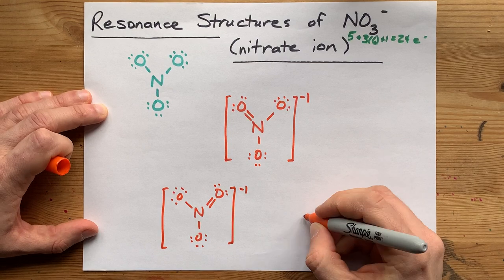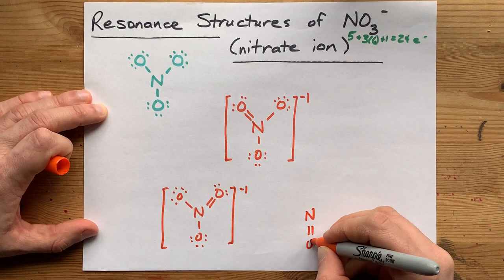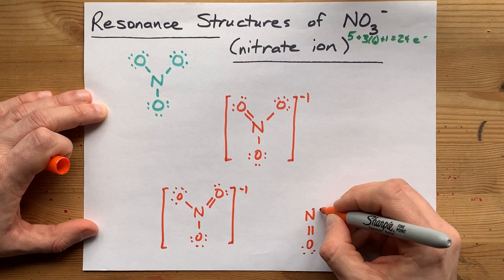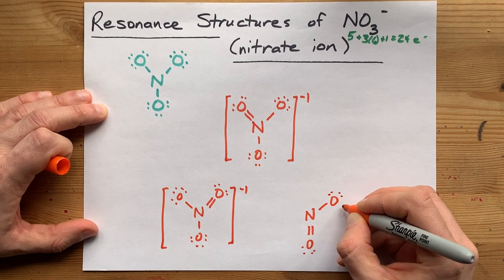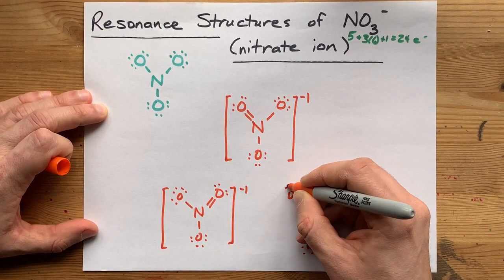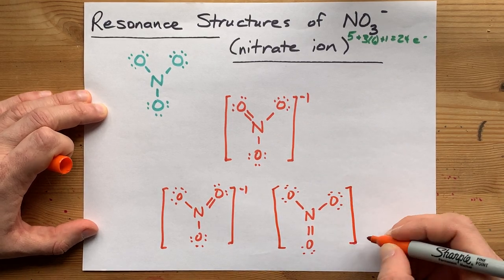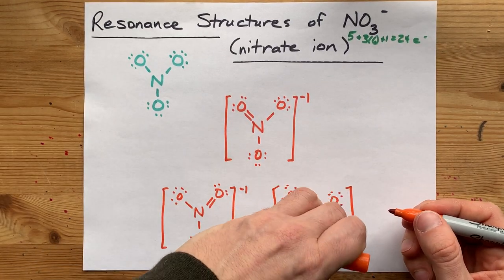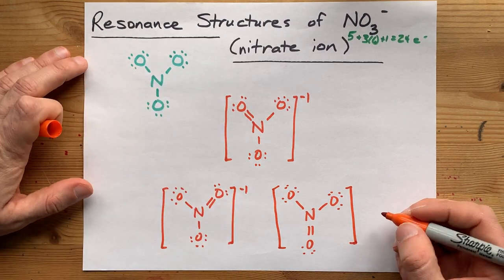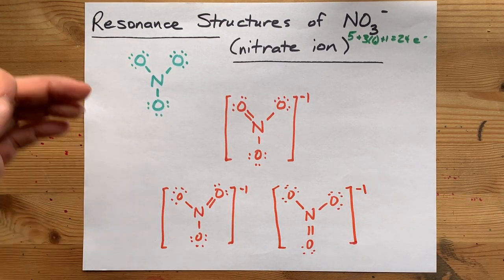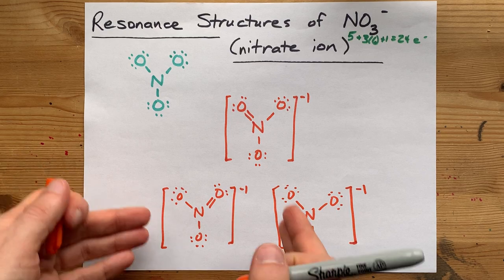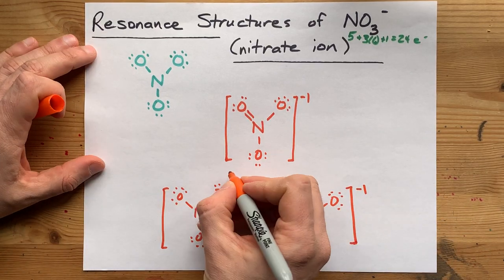And again, just as easily, we could have brought in an electron pair from the oxygen on bottom. That leaves the two upper oxygens as single bonds. You might recognize that these are all kind of equivalent. I've basically just taken each one and rotated it around 120 degrees from each other. They're all technically valid Lewis structures for this ion.